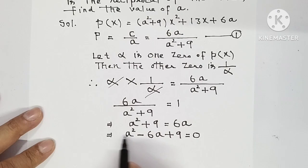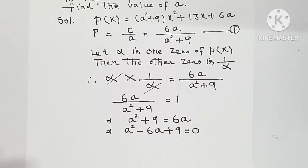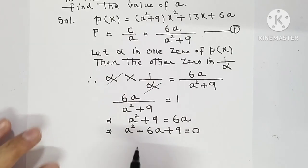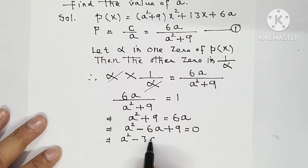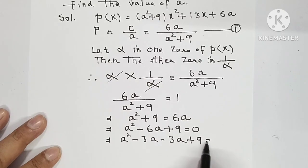So here a² coefficient 1, constant 9. So 1 into 9 is 9. 9 के 2 factors multiply करने पर 9 बनाएं plus minus करने पर 6 बनाएं. यह बनेगा a² minus 3a minus 3a plus 9 is equal to 0.